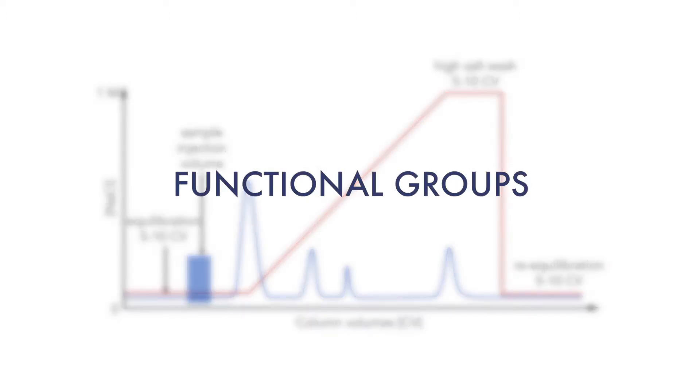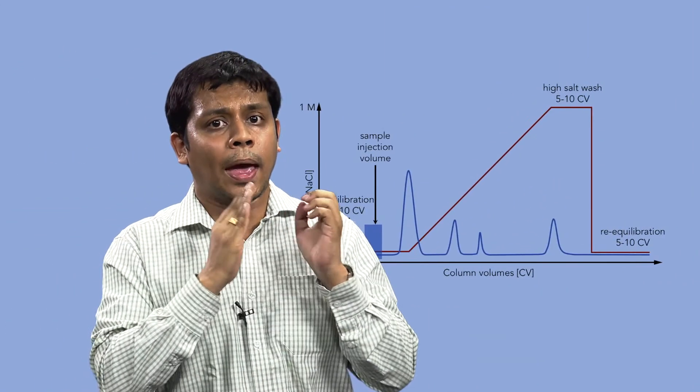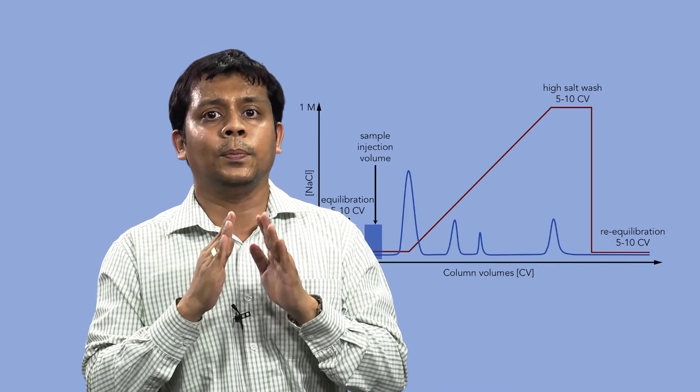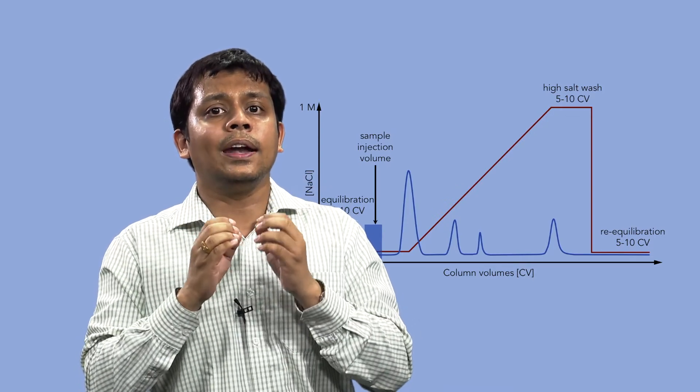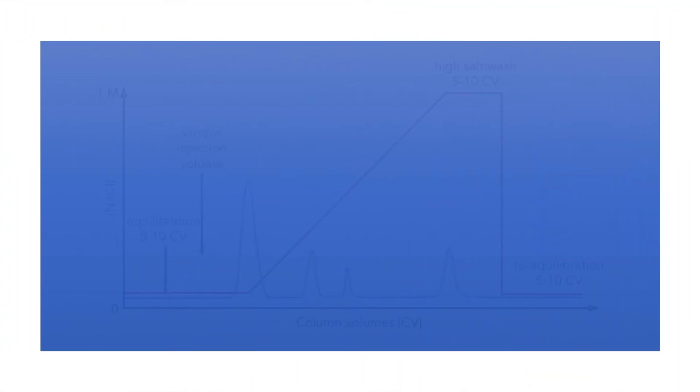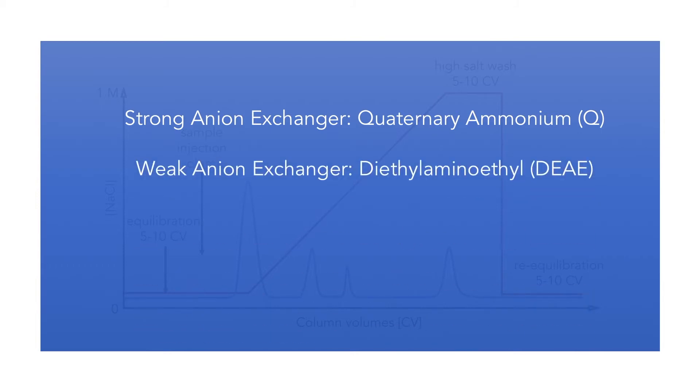The functional group substituted onto a chromatographic matrix determines the charge of an IEX medium, that is, a positively charged anion exchanger or a negatively charged cation exchanger. For example, strong anion exchanger: quaternary ammonium or Q; weak anion exchanger: diethylaminoethyl or DEAE; strong cation exchanger: sulfopropyl, etc.